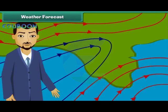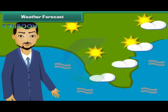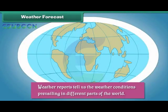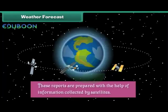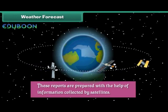Prediction of the future weather conditions of an area is called weather forecast. Weather forecast predicts the temperature, humidity and possibility of rainfalls in a particular area in the near future. Weather reports tell us the weather conditions prevailing in different parts of the world. These reports are prepared with the help of information collected by satellites.